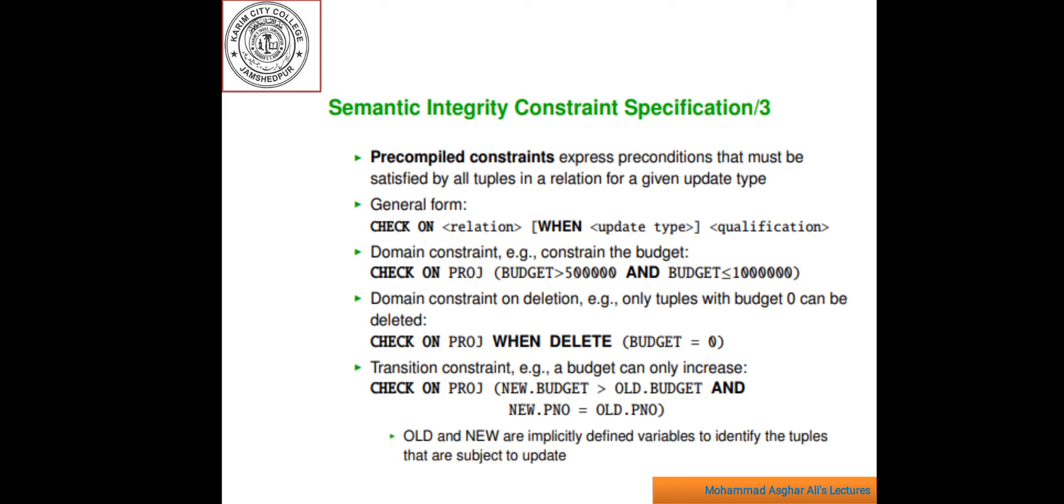For example, domain constraint. The budget of a project is between 500K and 1000K. Here we write here, check on project budget greater than equal to 5000 and less than equal to 1000K.